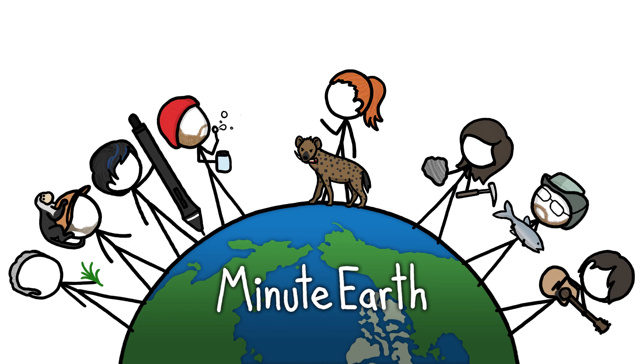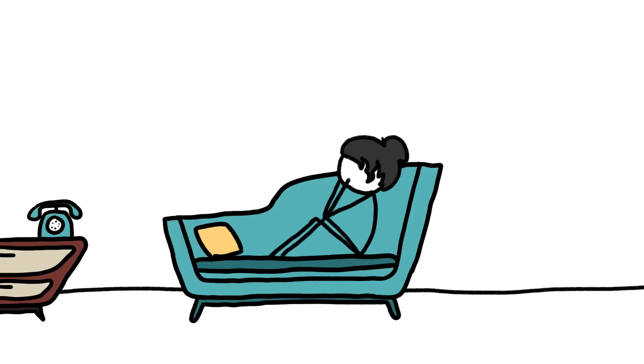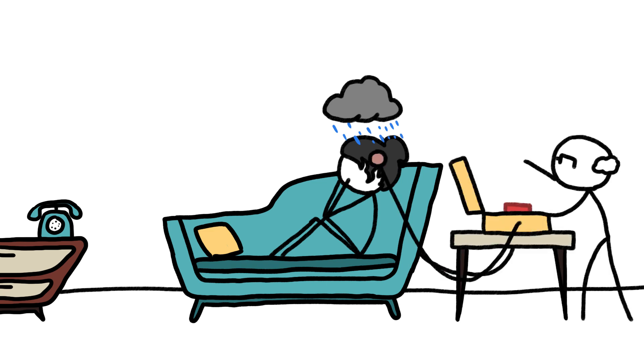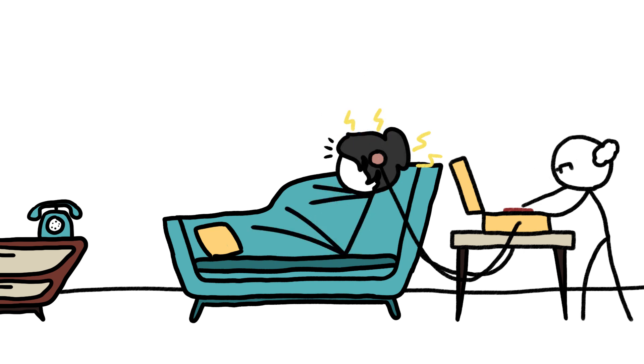Hi, this is Kate from MinuteEarth. In the mid-20th century, a standard treatment for severe depression was to attach electrodes to a patient's skull and turn on the juice, running an electrical current through the brain that would cause a brief seizure, a process known as electroshock therapy.